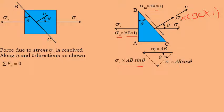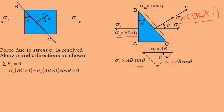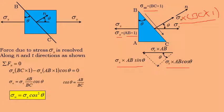For equilibrium of normal forces, the sum of normal forces equals zero: σn × bc × 1 − σx × ab × cosθ = 0. Therefore σn = σx × (ab/bc) × cosθ. Since ab/bc = cosθ from the triangle, the normal stress becomes σn = σx × cos²θ.